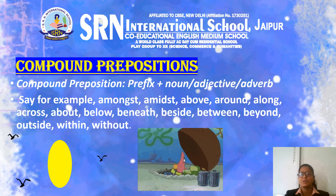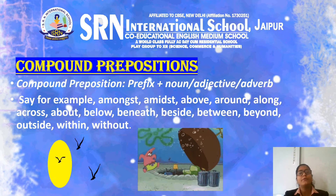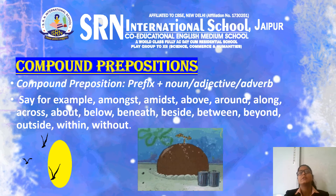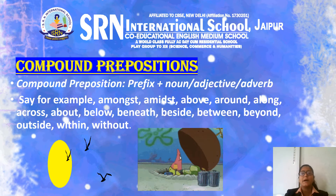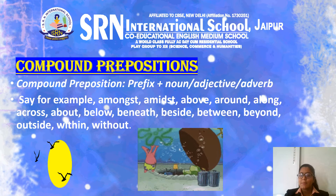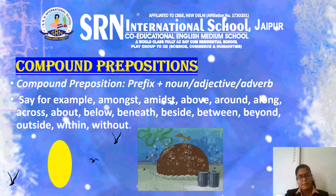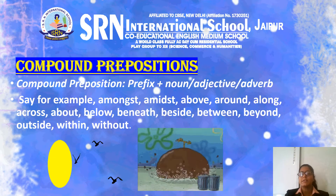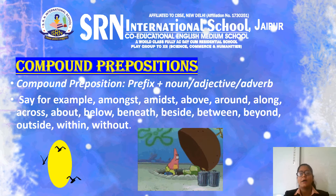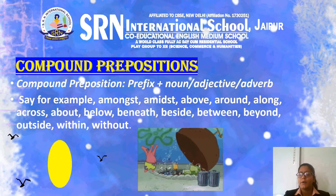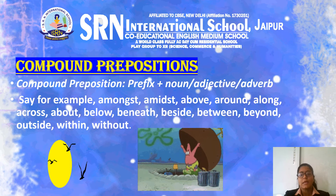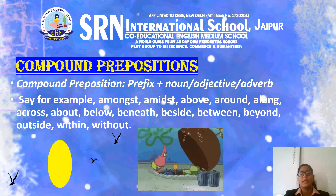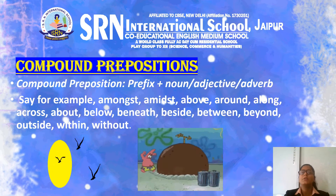The last one is compound prepositions. Compound prepositions are made up of two or more words but are always written as one word. They look like regular prepositions, adverbs, or prepositional phrases but are different from those. These are sometimes also called double prepositions, multi-word prepositions, or phrase prepositions. Examples include: amongst, amidst, above, around, along, across, about, below, beneath, beside, between, beyond, outside, within, and without.